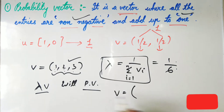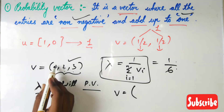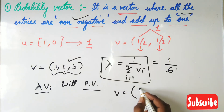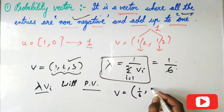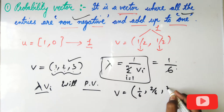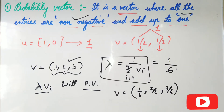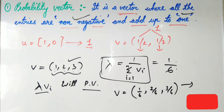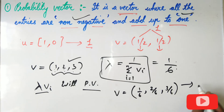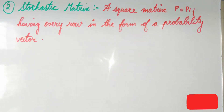So lambda·V = (1×(1/6), 2×(1/6), 3×(1/6)) = (1/6, 2/6, 3/6). These are positive numbers, it is a single-row matrix, and when I add all three components — 1/6 + 2/6 + 3/6 — I get 1. So lambda·V is indeed a probability vector.